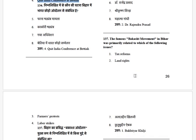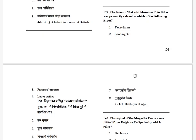The famous Bakasht movement in Bihar was primarily related to which of the following? Options: tax reforms, land rights, farmer protests, and labor strikes. The answer is land rights.